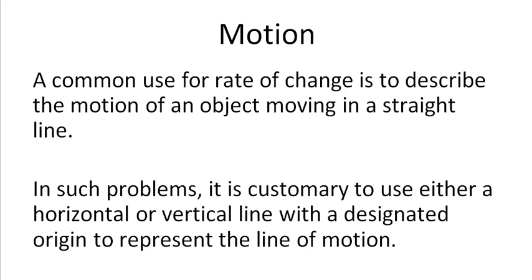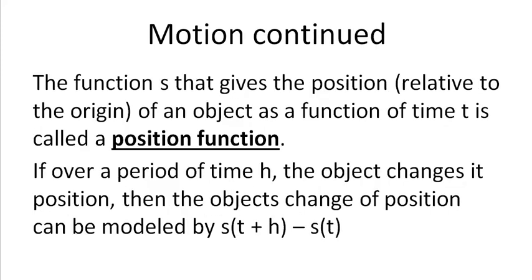Now what we want to do is turn this into motion. A common use for rate of change is to describe the motion of an object moving in a straight line. In such problems, it's customary to use either a horizontal or a vertical line to denote the object is moving. The function S that gives the position relative to the origin of an object as a function of time t is called a position function — written as S of t. It gives us the position of an object as a function of time t. Basically, you plug a time t in and you get the position of that object at that time.